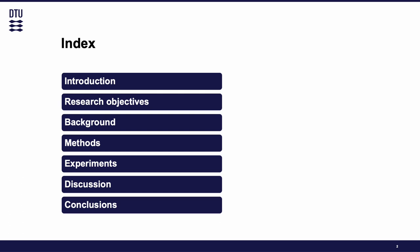Throughout the presentation we are going to follow this outline. First we are going to introduce the topic and the research objectives. Then we are going to explain some background for understanding the methods that we have developed, the experiments we have conducted, and then with the results we are going to make some discussion and state some significant conclusions.